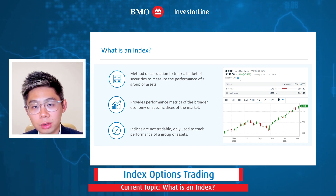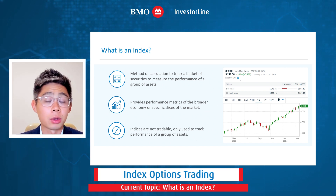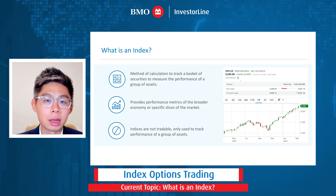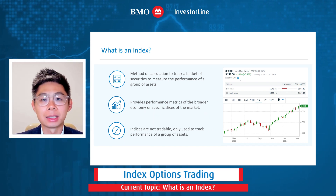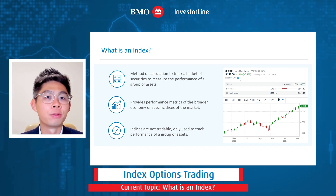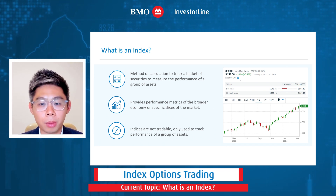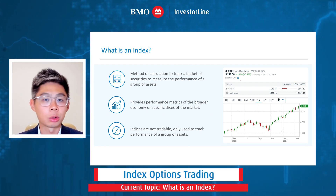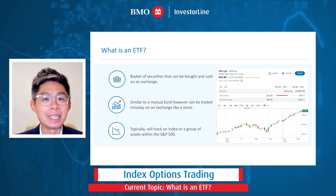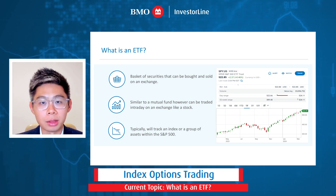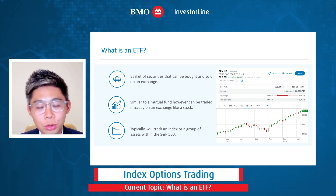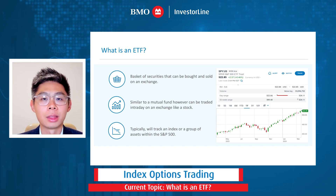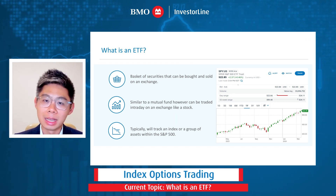One key thing to remember is that indices are simply calculations — nothing other than a formula — and while widely tracked, the indices themselves are actually not tradable. You cannot trade an index itself; you can only use them to track the performance of a group of assets. That's really why the invention of an ETF is such a popular tradable product these days — because an ETF gives us an instrument that can actually trade a basket of securities that can be bought or sold on an exchange, tracking these popular indices that we use on a daily basis.